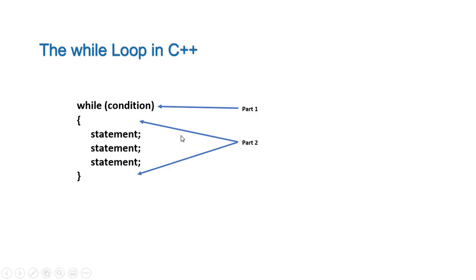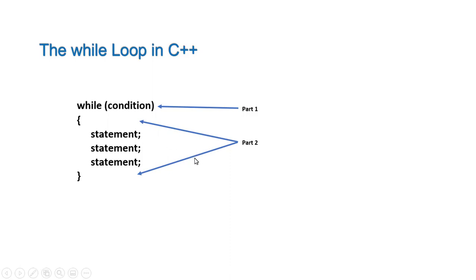In C++, the while loop has two main parts. Here on the screen is a diagrammatic representation of the while loop. The first part is an expression that is tested for a true or false value. While the second part is the block of statements — this is the body part of it. We can have one statement or multiple statements. This second part is repeated as long as the expression is true.